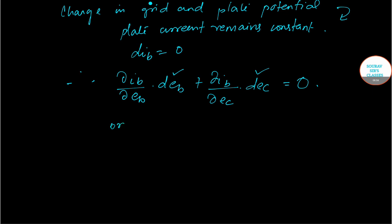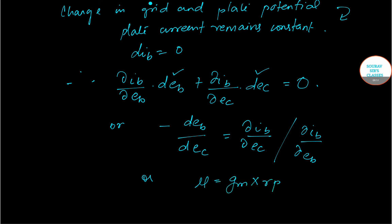So we can write the above as minus DEB by DEC equals del IB by del EB divided by del IB by del EC. Or we can rewrite this as mu equals GM into RP.